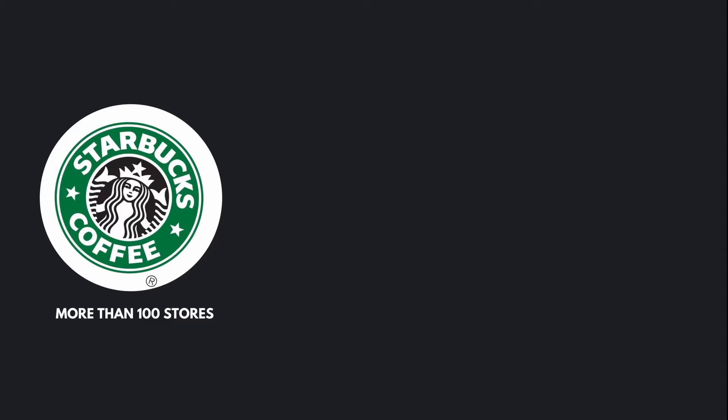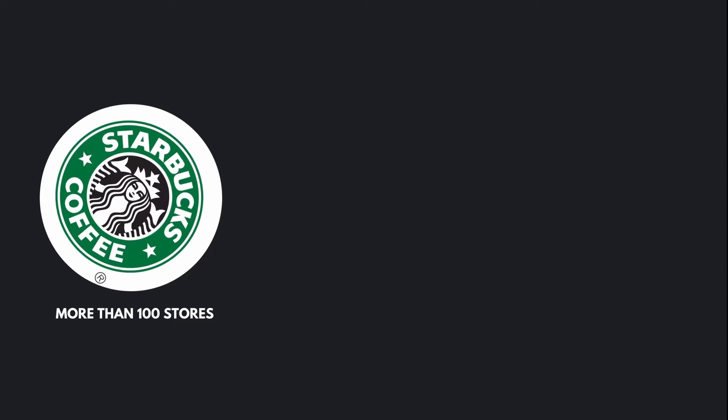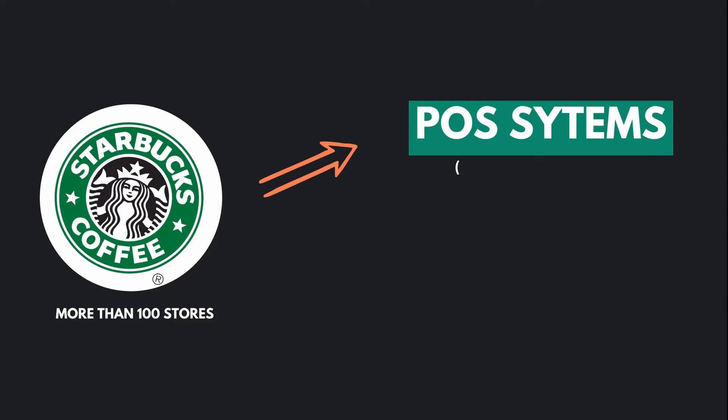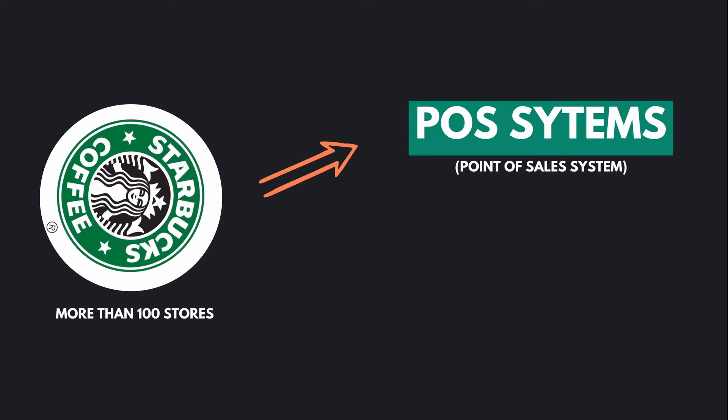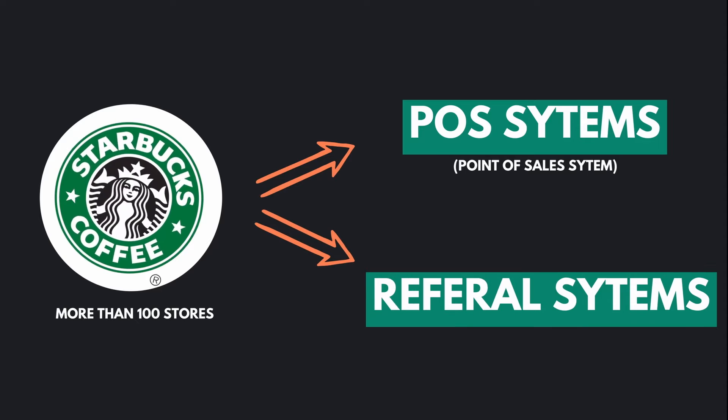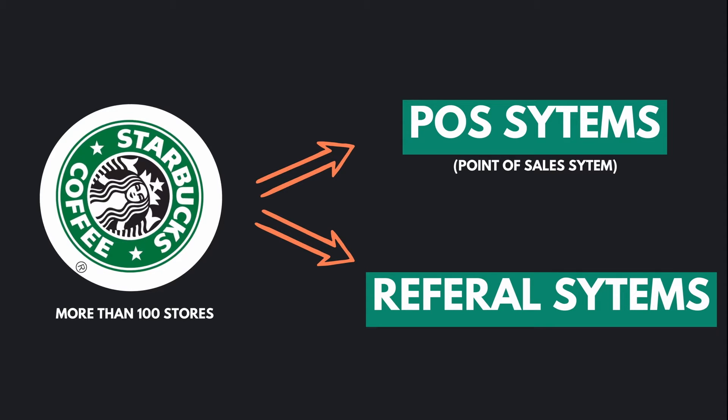Let's look at this from an organization level - how the cycle of data works. Let's use an example like Starbucks, which has more than 100 stores across the globe. The way the data cycle works for these organizations is they have different systems in place. For example, they have a point-of-sale (POS) system where a customer comes in, buys something, it gets registered, paid out, and so on.